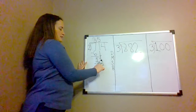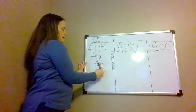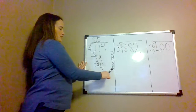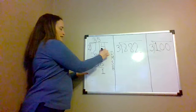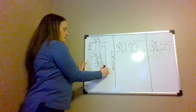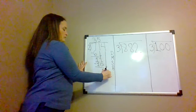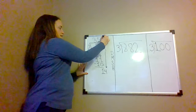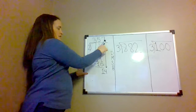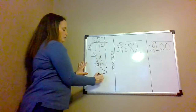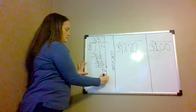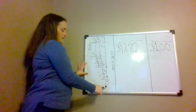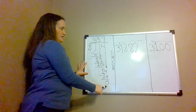Then we're going to subtract: 11 take away 10 is 1. Then we're going to bring down the 4. 14 divided by 2 is 7. 7 times 2 is 14. 14 take away 14 equals 0.